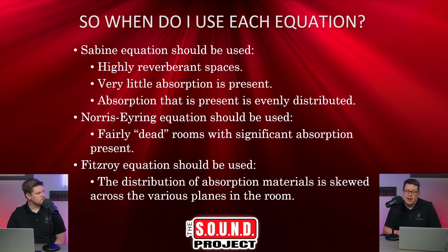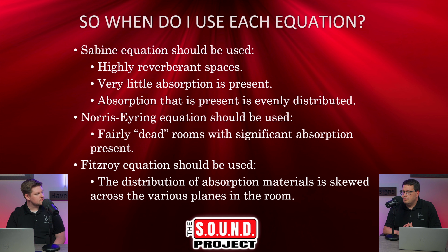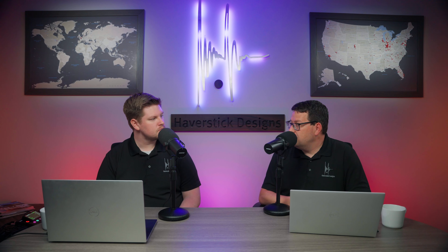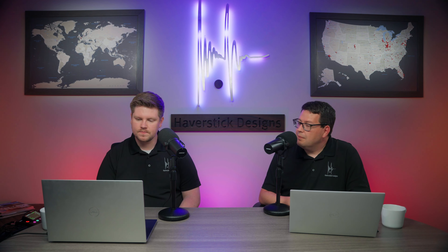To summarize when to use each equation: the Sabine equation is for highly reverberant spaces with lots of reflective surfaces, very little absorption, and absorption evenly distributed. The Eyring equation is for really dead rooms where most surfaces are absorptive — like carpeted floor, drop tile ceiling, and drywall walls with acoustic panels. Fitzroy is for rooms with a variety of different materials where absorption is not evenly distributed across surfaces.